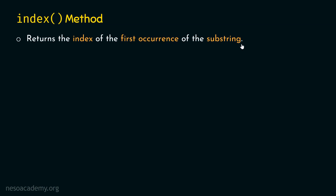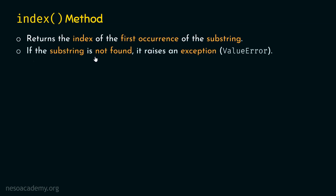The main question that arises is: what is the difference between the index method and the find method? They both work exactly the same, but there must be some difference. The difference lies in the fact that if the substring is not found, then the index method raises an exception, also called a ValueError. So if the substring passed to it as an argument is not found, then it will raise an exception.